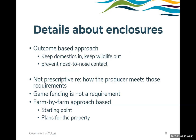The main goal in looking at enclosures is an outcome-based approach: keeping domestic animals in, doing our best to keep wildlife out, and preventing nose-to-nose contact through some form of separation fencing. Our enclosure requirements are not prescriptive regarding how the producer meets those objectives, and game fencing is not a requirement. We use a farm-by-farm approach, starting with a site visit to look at the existing primary containment and what the farmer's plans are for the property.